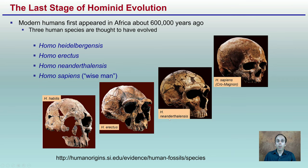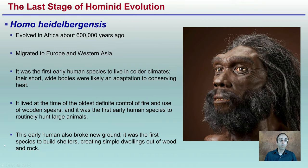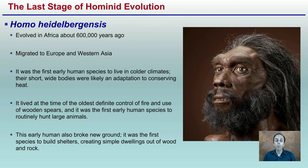Looking at the last stages of hominid evolution: modern humans first appeared in Africa about 600,000 years ago, and three human species were thought to have evolved. There are images here of the different skull structures. Homo heidelbergensis evolved in Africa about 600,000 years ago and migrated to Europe from Western Asia. It was the first early human species to live in colder climates, and their short, wide bodies were likely adapted for conserving heat.